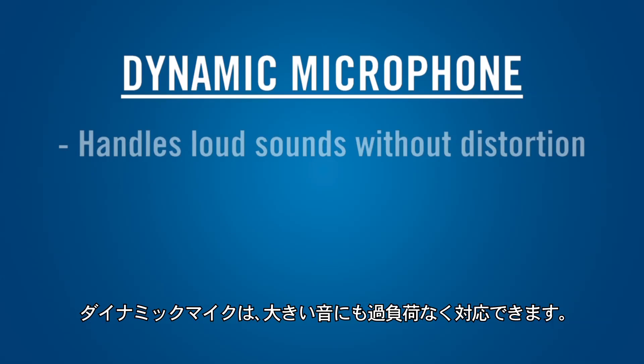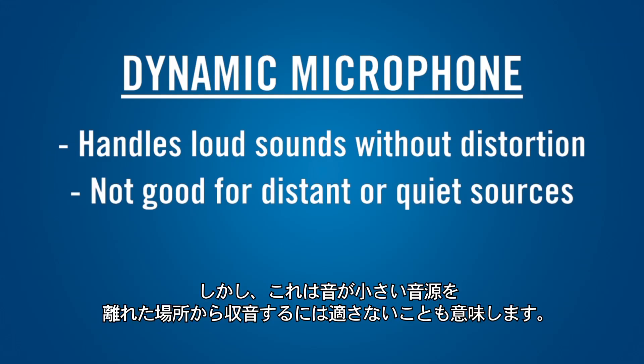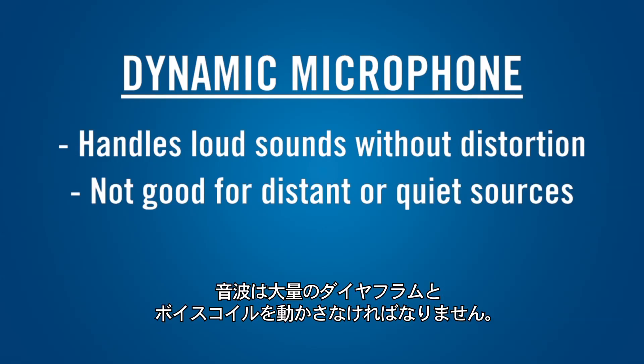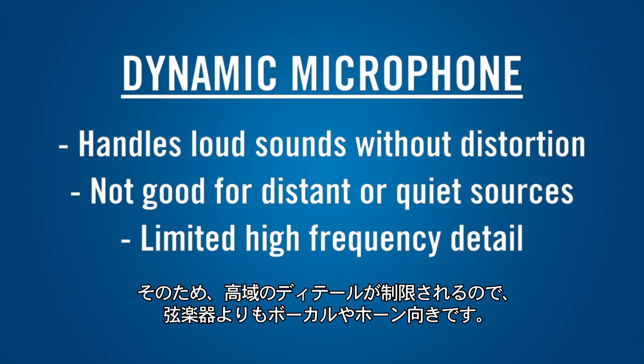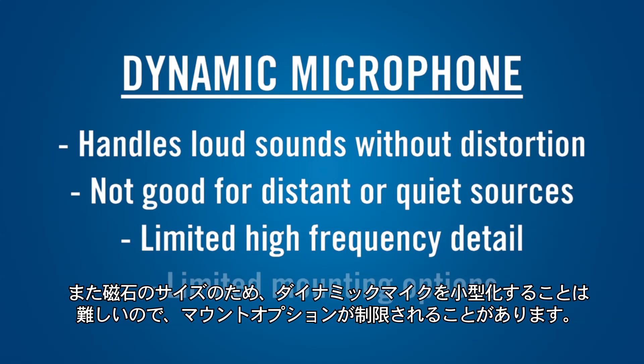Dynamic microphones can handle even the loudest sounds without overloading, but this also means that they're not well-suited to distant micing of quiet sources. Because the sound waves have to move the mass of the diaphragm and the voice coil, they usually have limited high-frequency detail, so they're better for vocals or horns than for stringed instruments. The size of the magnet makes it difficult to make a dynamic mic very small, which can limit your mounting options.